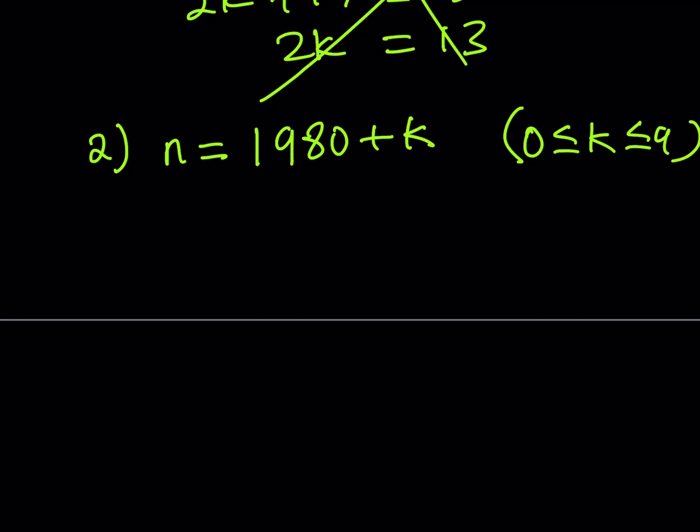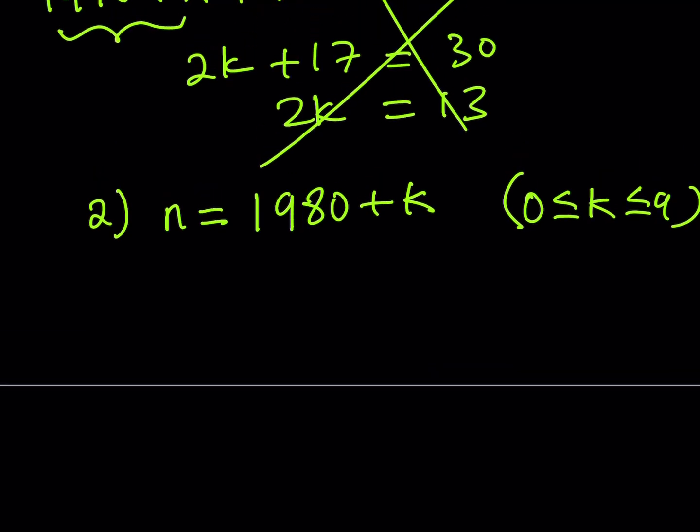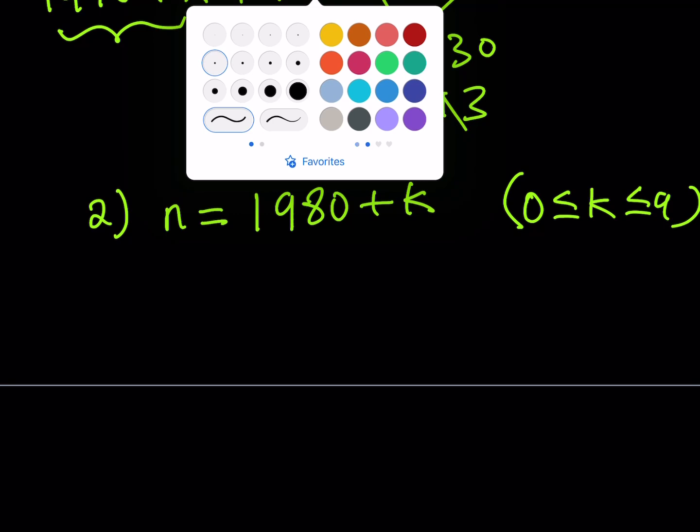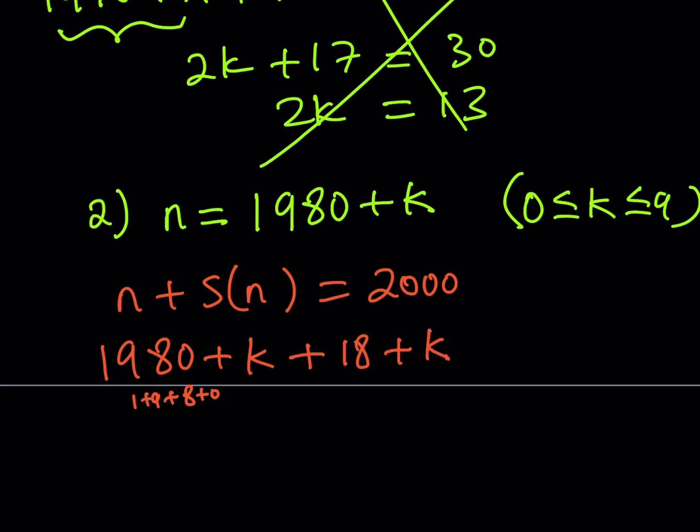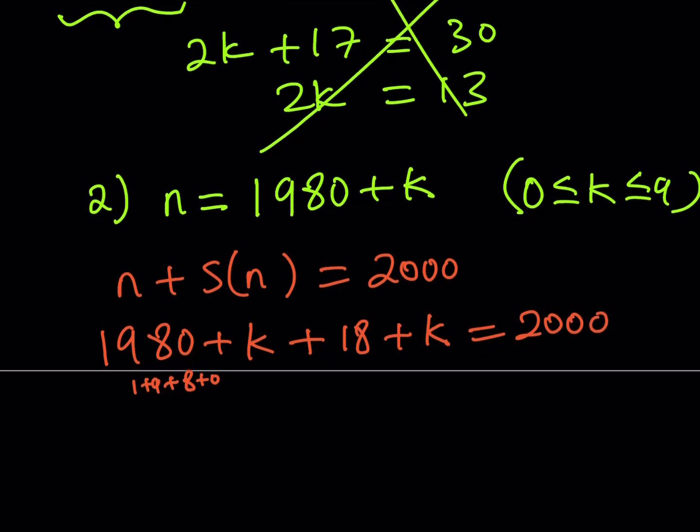Cool. So we'll do the same thing here. We have an equation, and it looks like this: n plus sn is equal to 2000. And I'm going to substitute. So this is going to be 1980 plus k. And sn would be the sum of the digits of this number. So 1 plus 9 plus 8 plus 0, that's going to give me 18, and plus k, that's going to be the sum of the digits of this number, equals 2000.